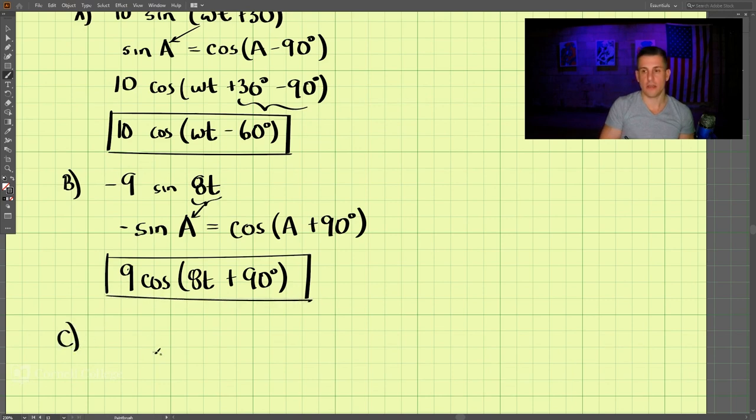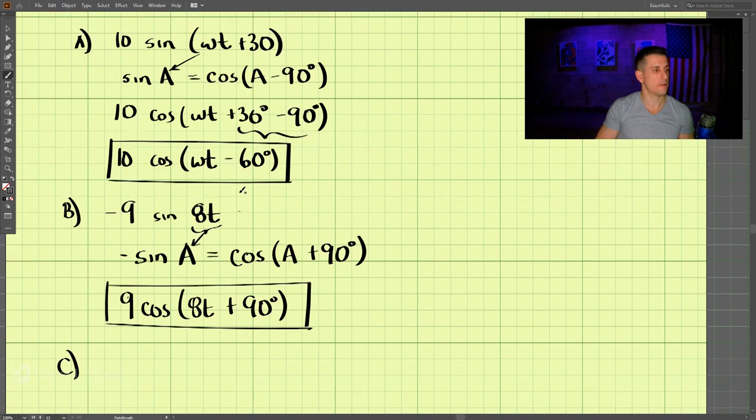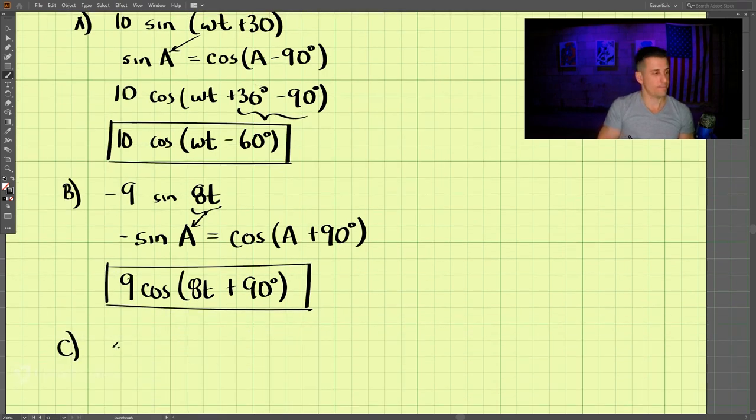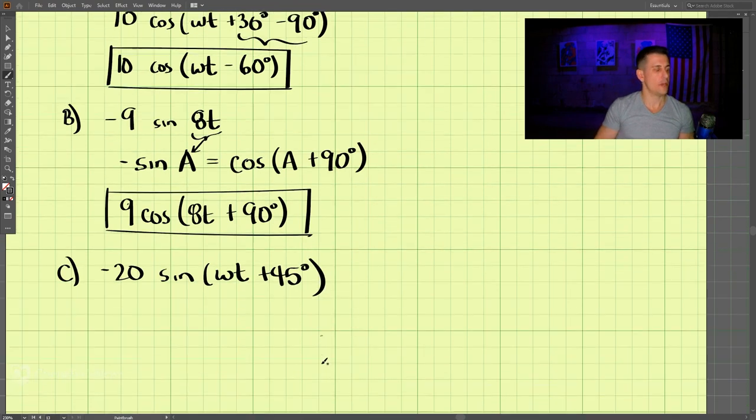Now for part c. Negative 20 sine omega t plus 45 degrees. Here we can use the same thing that we used in part b. Negative sine of an angle a is equal to cosine of a plus 90 degrees.